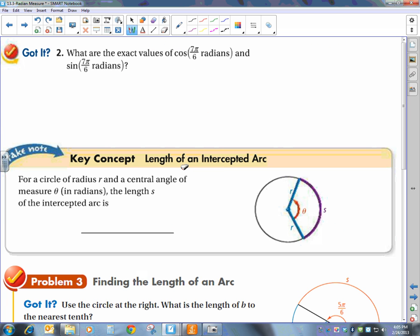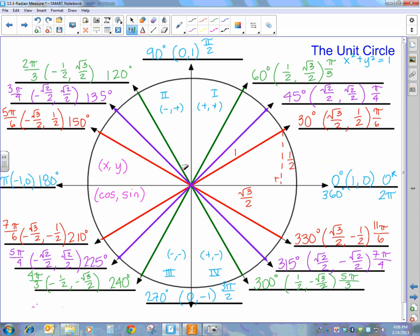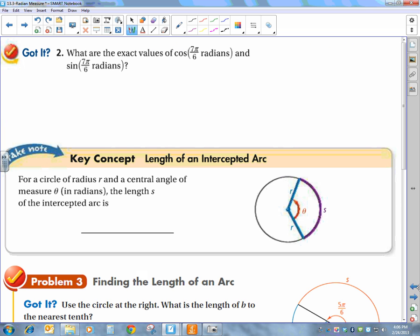What are the exact values of the cosine of 7π over 6? So we're going to go find 7π over 6. 7π over 6. What's my cosine? Remember, cosine is the first one. So my answer is going to be negative square root of 3 over 2. So we'll go answer cosine of 7π over 6 is negative square root of 3 over 2.